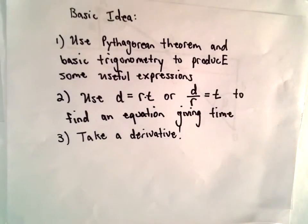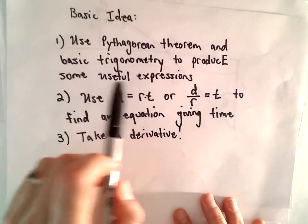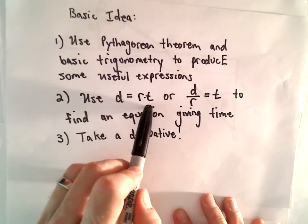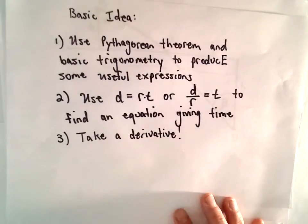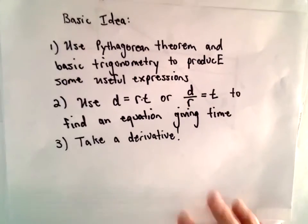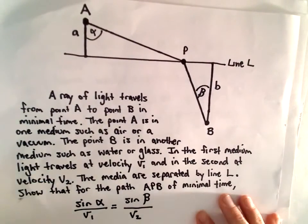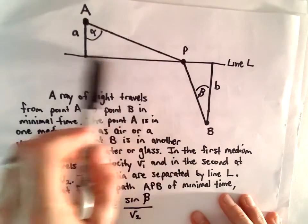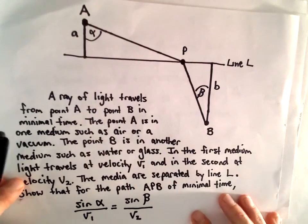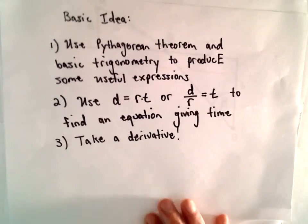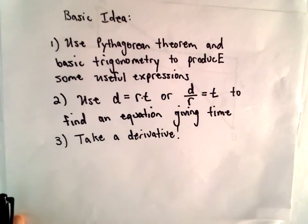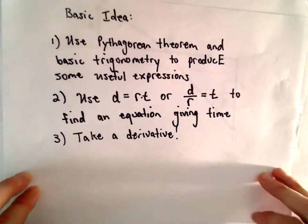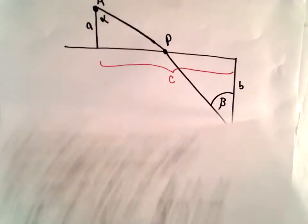The basic idea: I'm going to use the Pythagorean theorem and some basic trigonometry to produce some useful expressions. We're going to use the fact that distance equals rate times time, or equivalently, distance divided by rate equals time. That gives us an equation involving time. We're going to make the equation depend only on a single variable — the horizontal distance from point A to point P. That gives us an equation in a single variable, and then it just amounts to doing the calculus: take a derivative, set it equal to zero — I won't justify that it's a minimum, I'll let you do that — and we'll get that sine of alpha over V₁ equals sine of beta over V₂.